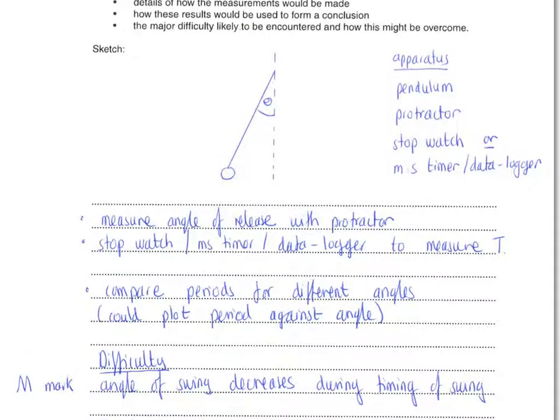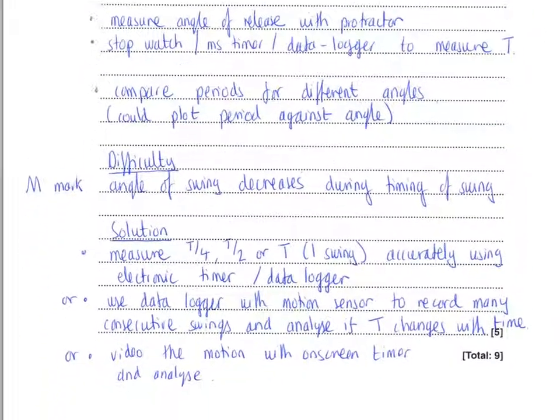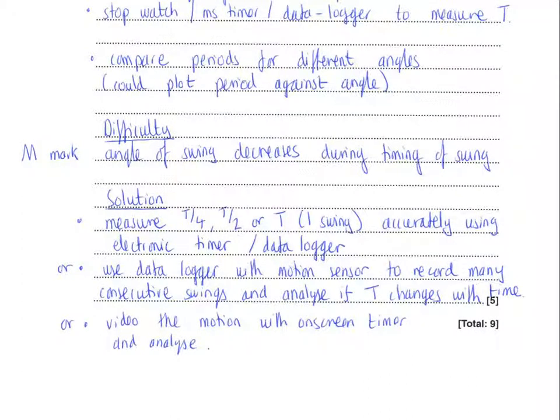If you think back to this situation of the pendulum swinging, and if we leave it swinging for a number of oscillations, that amplitude and the angle are going to decrease. And that makes timing over a number of periods an inappropriate way, because it's actually going to hide the results that you're looking for. So for that reason, this is the only answer that you can get credit for here. There is also, sadly, a method mark awarded for the difficulty. But I think probably that does make sense, nevertheless. So the difficulty is that the angle of swing decreases during the timing.